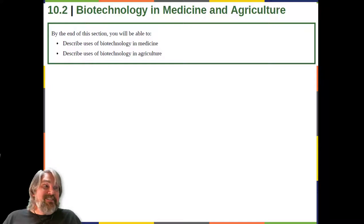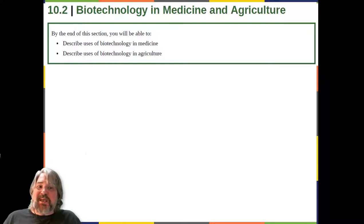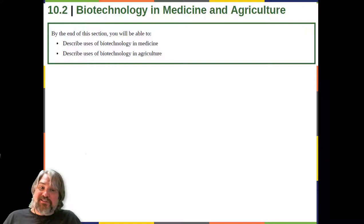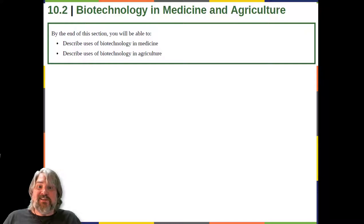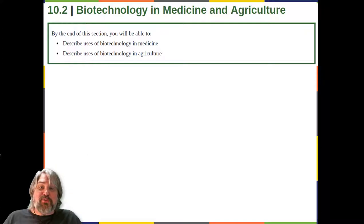It is easy to see how biotechnology can be used for medicinal purposes. Knowledge of the genetic makeup of our species, the genetic basis of heritable diseases, and the invention of technology to manipulate and fix mutant genes provides methods to treat diseases. Biotechnology in agriculture can enhance resistance to disease, pests, and environmental stress to improve both crop yield and quality.